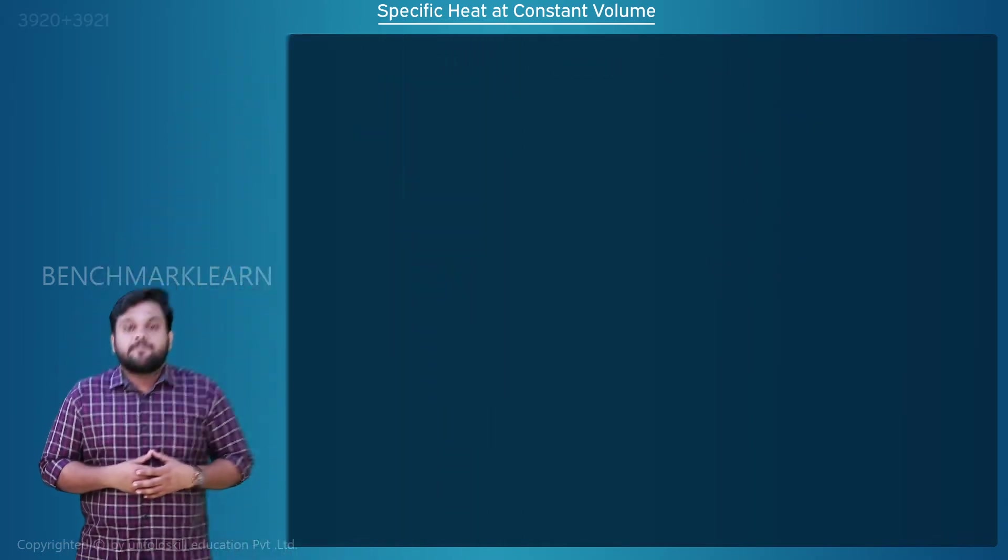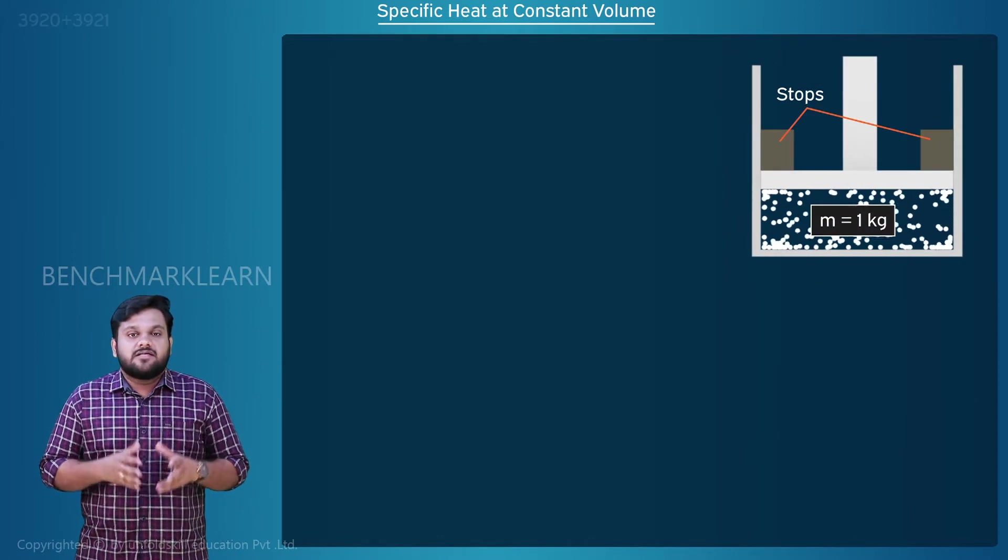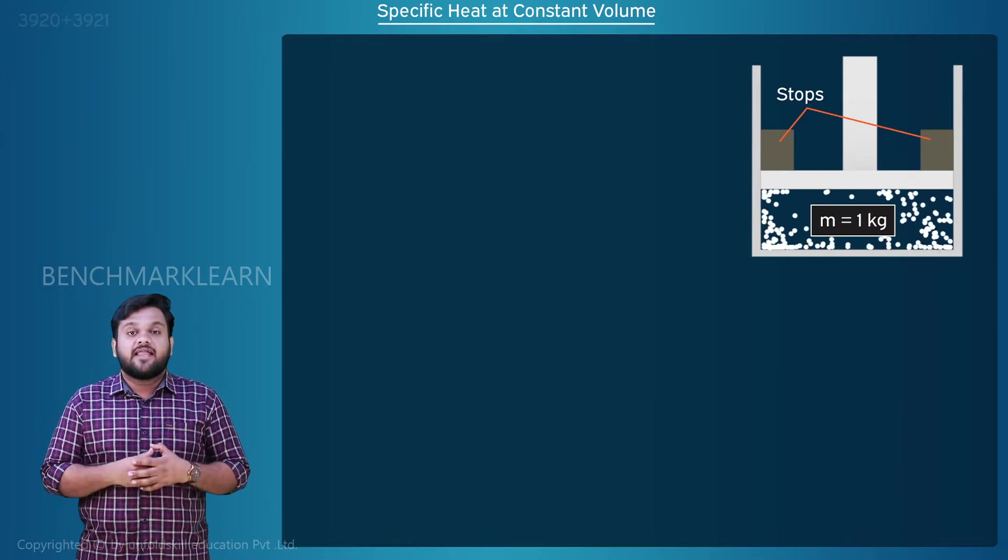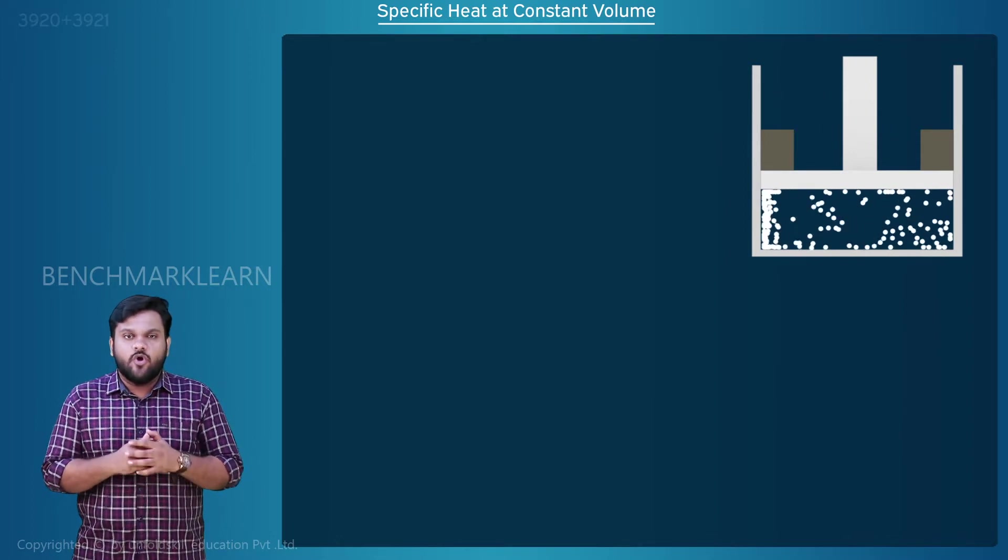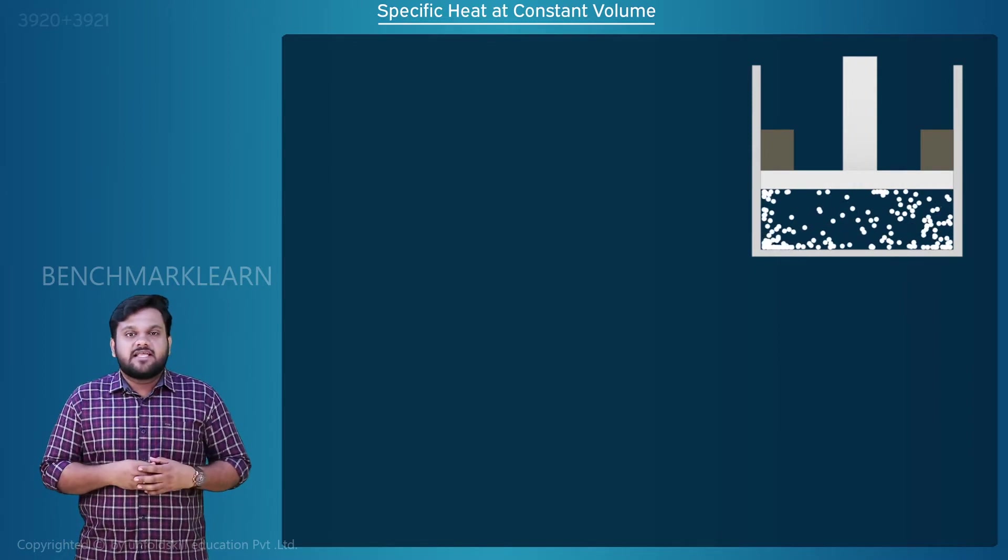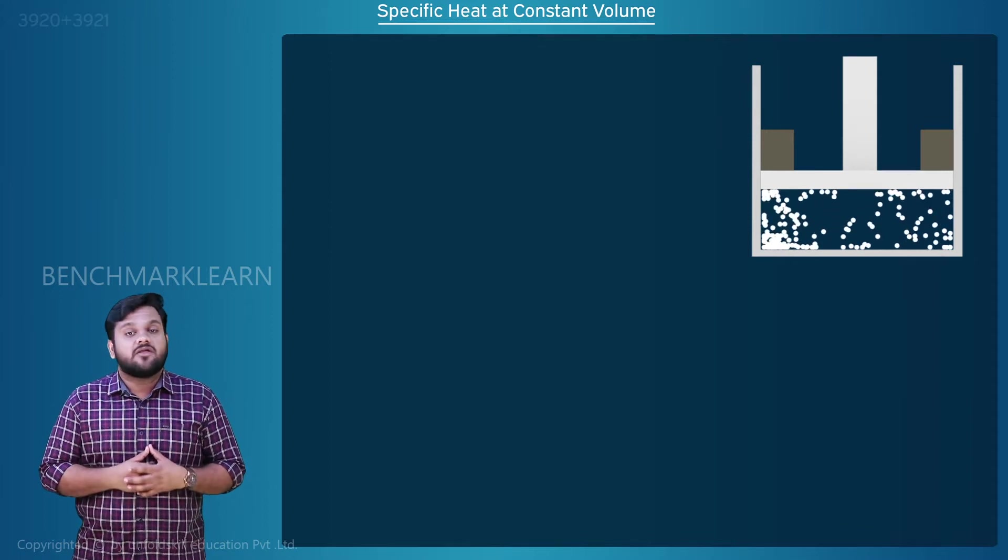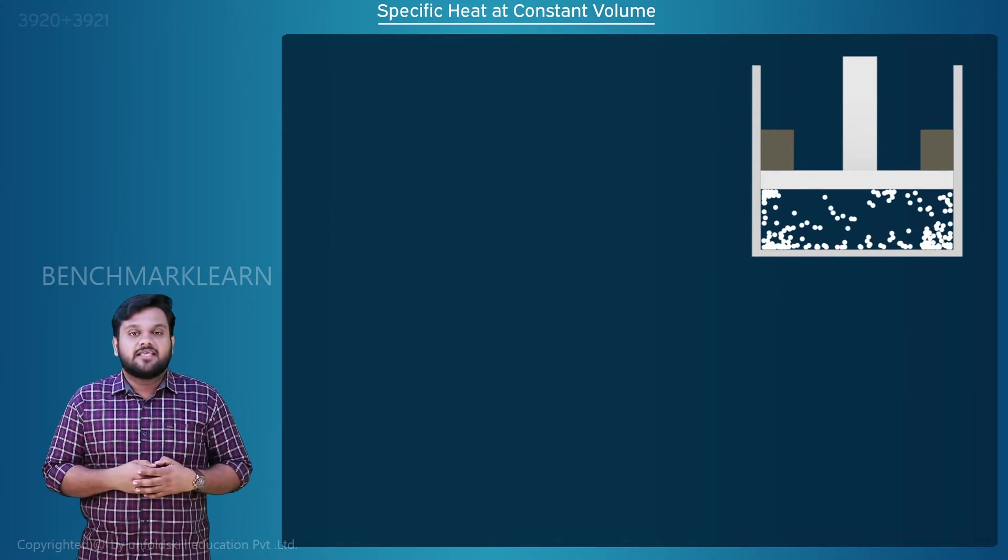Now consider a piston cylinder arrangement with unit mass of gas. The system is a closed and stationary one. It involves no work other than PdV work. The piston is fixed at a position so that the volume is maintained constant, then the gas is heated.